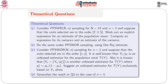Do the same under PPSWOR sampling using Desraj estimates. Because the sample size is 3 and units were selected in order 7, 3, 5, we compute E1 based on y7 and p7, E2 based on y3 and y7, and E3 based on y5 and y3 and y7. Once we have all three, we take the average — that is an estimate of the population total. Dividing by capital N, which is 10, gives an estimate of the population mean. That averaging technique is what is known as the Desraj estimate.